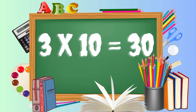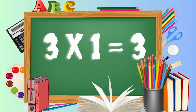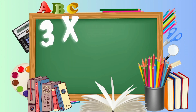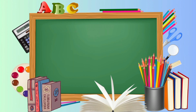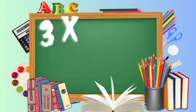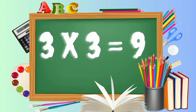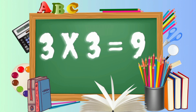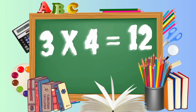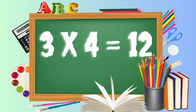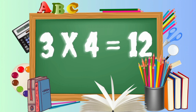3, 10's a 30. 3, 1's a 3. 3, 2's a 6. 3, 2's a 6. 3, 3's a 9. 3, 3's a 9. 3, 4's a 12. 3, 4's a 12.